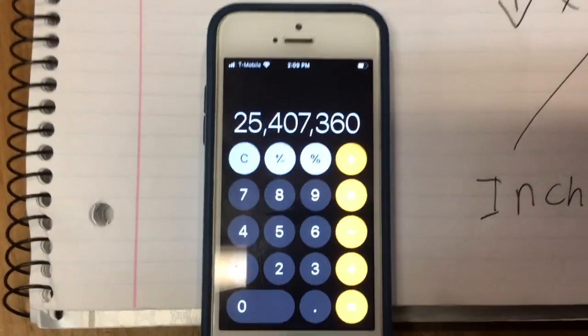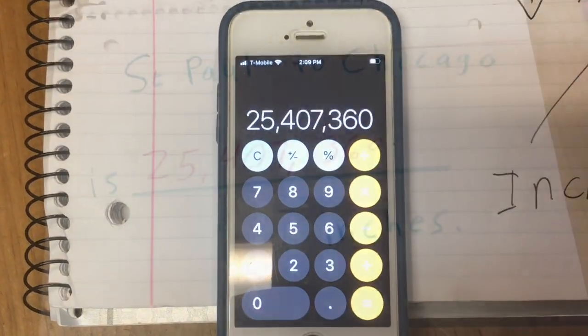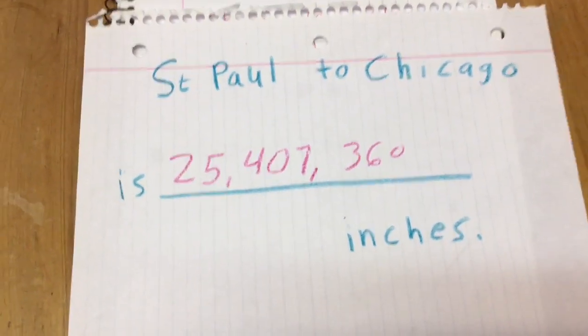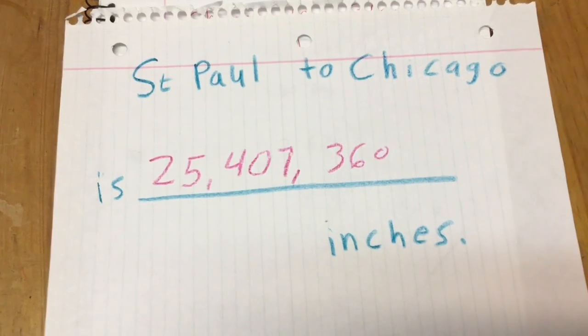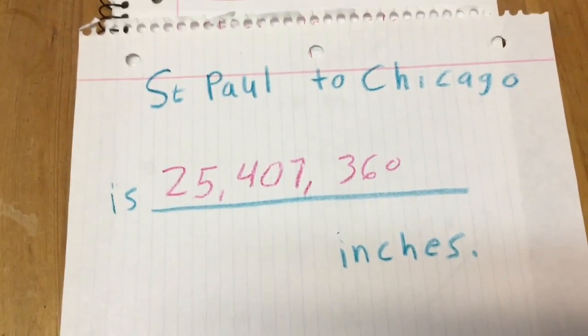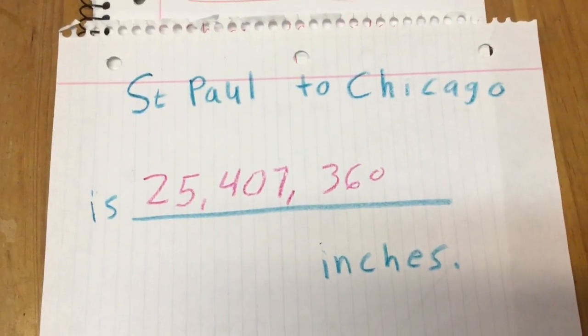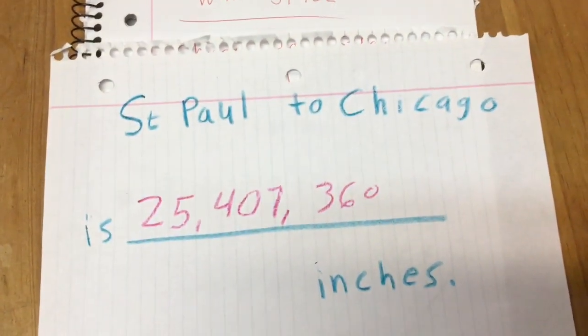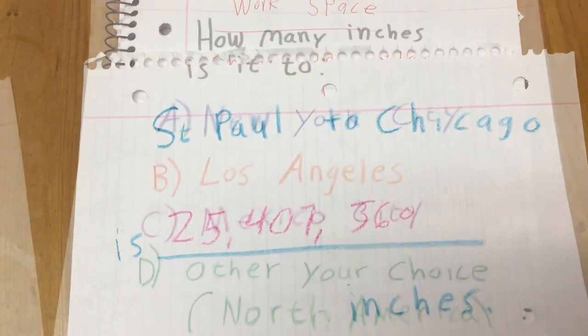Now I take my answer from my workspace and I just put it on my final copy that I had right from the beginning. So I didn't know what the answer was going to be, but that was always the question. St. Paul to whatever city you pick is going to be blank inches. So that's how that's going to work.